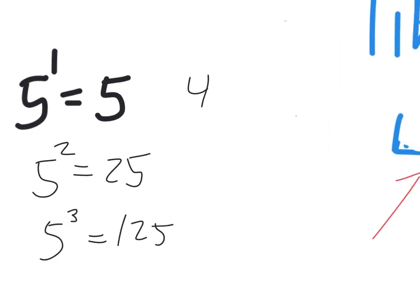4 to the 1st — 4. 4 to the 2nd — 16. How about 4 to the 3rd, though? Not many people know that one off the top of their head. 64, very good. That was 5 and 4.